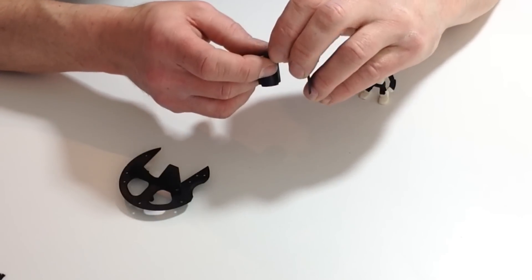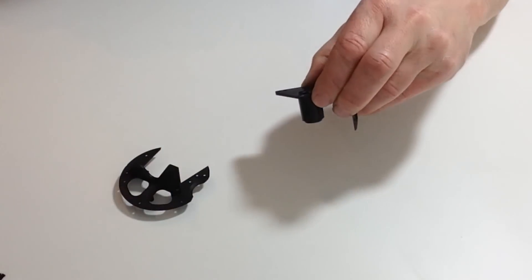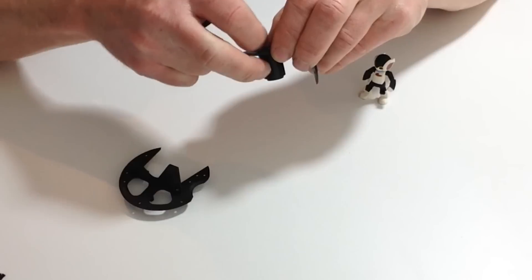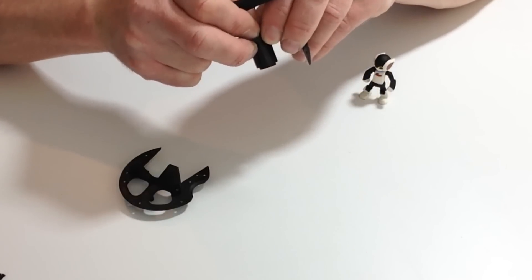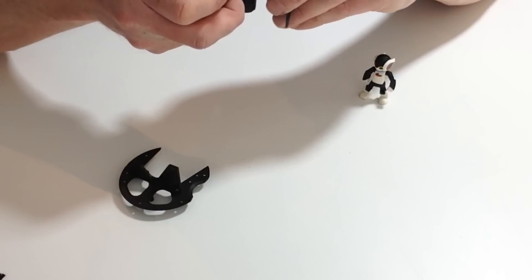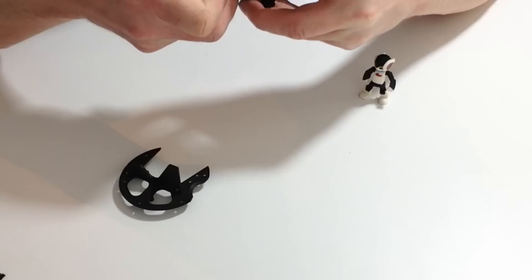Line up the two holes and then taking two of the screws provided and the screwdriver, place two screws connecting the neck mounting and the left head frame into position.